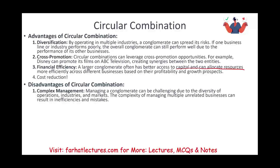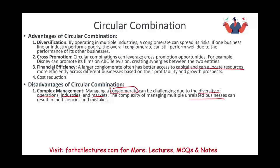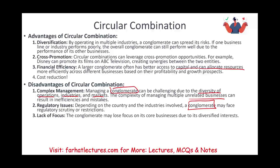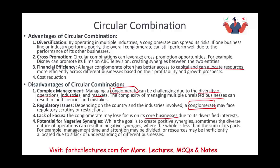Disadvantages include complex management: management is now running both Disney and ABC simultaneously, requiring knowledge of both companies and both industries. Making a conglomerate work is challenging due to the diversity of operations, and this complexity can result in inefficiencies and mistakes. There can also be regulatory issues, as conglomerates are not well-liked in some countries. Lack of focus is another risk — you may lose focus on the core business due to diversified interests. There is also the potential for negative synergy, where the whole is less than the sum of its parts, if management time and resources are inefficiently allocated.